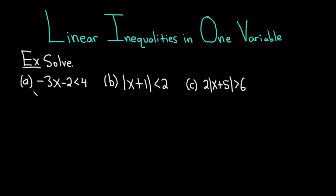Let's go ahead and start with part a, which is minus 3x minus 2 is less than 4. In this case, we want to start by trying to isolate the minus 3x term. So, because we have a minus 2, we can simply add 2 to both sides.